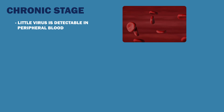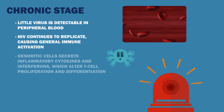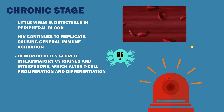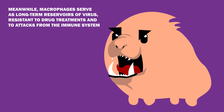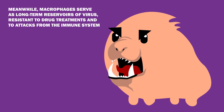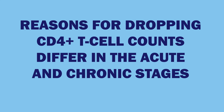During the chronic stage, little virus is detectable in the peripheral blood. However, HIV continues to replicate, causing general immune activation. Dendritic cells secrete inflammatory cytokines and interferons, which alter T-cell proliferation and differentiation, contributing to the immune dysregulation characteristic of the chronic stage. However, the immune response to HIV is not strong enough to stop viral replication from continuing within lymphoid tissues. Meanwhile, macrophages serve as long-lived reservoirs of virus, resistant to drug treatments and to attacks from the immune system. Infected macrophages accumulate large internal vacuoles containing virus, which can travel into the plasma membrane, releasing their viral content into the extracellular space.